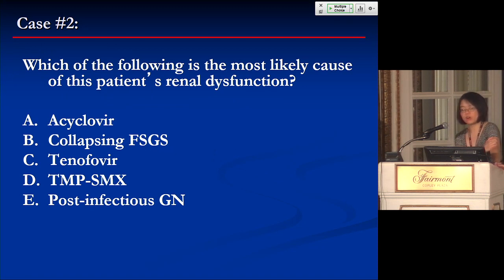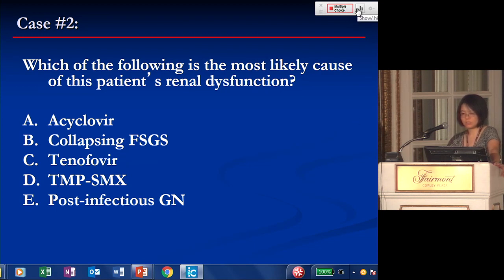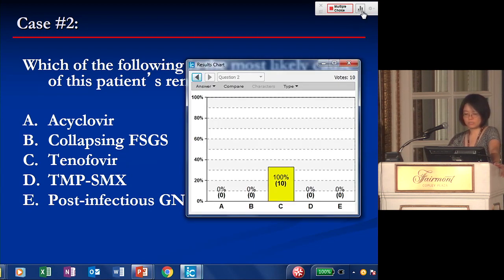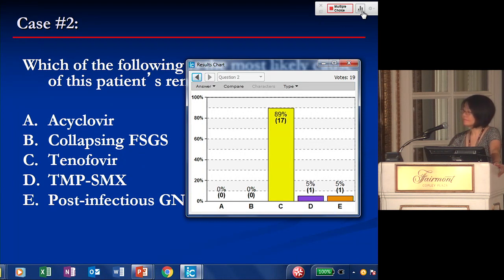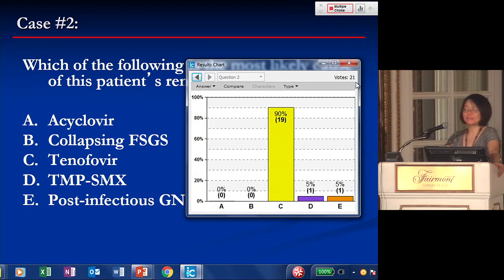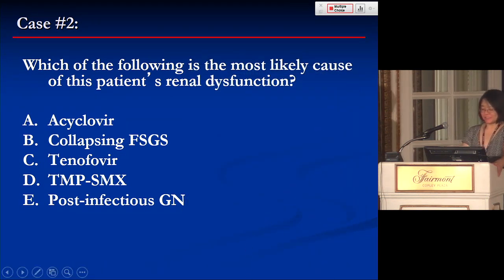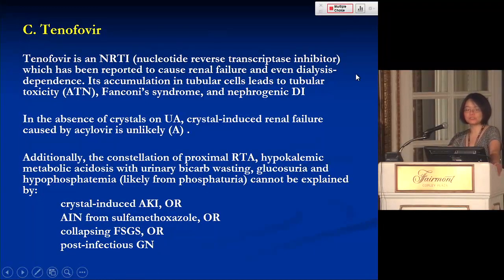Which of the following is the most likely cause of this patient's renal dysfunction? The answer is tenofovir.